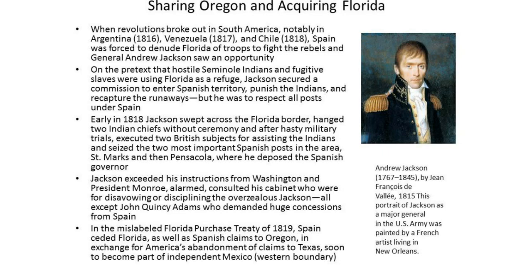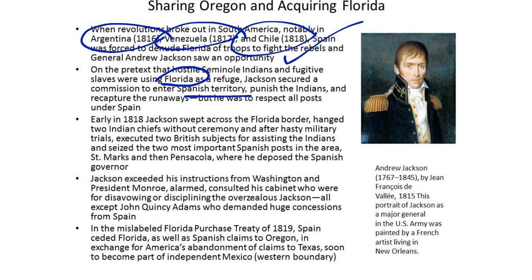When revolutions broke out in South America — notably in Argentina in 1816, Venezuela in 1817, and Chile in 1818 — Spain was forced to denude Florida of troops to fight the rebels. General Andrew Jackson saw an opportunity. On the pretext that hostile Seminole Indians and fugitive slaves were using Florida as a refuge, Jackson secured a commission to enter Spanish territory, punish the Indians, and recapture the runaways, but he was to respect all posts under Spanish control. Early in 1818, Jackson swept across the Florida border, hanged two Indian chiefs without ceremony, and after hasty military trials, executed two British subjects for assisting the Indians, and seized the two most important Spanish posts in the area — St. Mark's and then Pensacola.